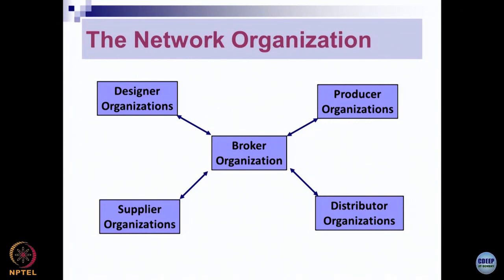The next type of organization design is called the network organization. This is one example of a broker organization — the mediator or connecting point of different organizations. A network organization has a broker organization at the center that collaborates with a designer organization, producer organization, distributor organization, and supplier organization for the product it deals with. The benefit is that operations can be built quickly and the business can scale up fast. You form alliances with organizations that have expertise in specific functions, connect them, find the market, and in a very short time the broker organization can scale up rapidly.